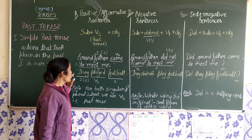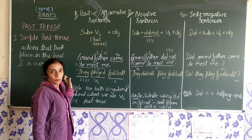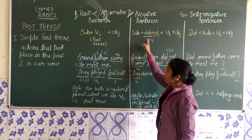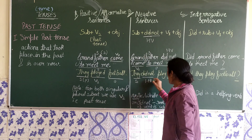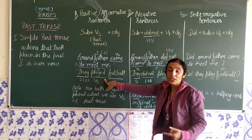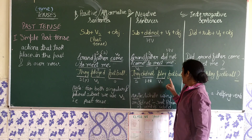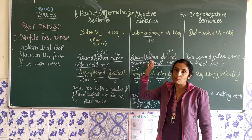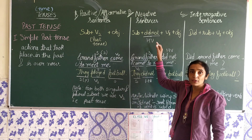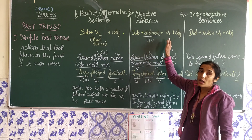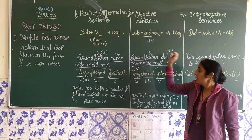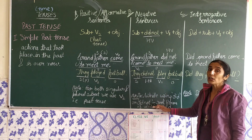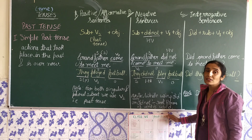Second example: 'They played football.' Now convert it to negative. 'They' is the subject. We have to use the helping verb 'did not', and the verb's second form 'played' is changed into the verb's first form — the root form. So: 'They did not play football.' For affirmative: subject, verb's second form, object. For negative: subject, 'did not', verb's first form, object. Remember, whenever we use 'did not' or 'did', we always use the main root form of the verb.